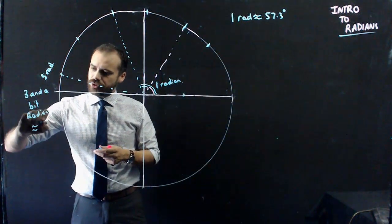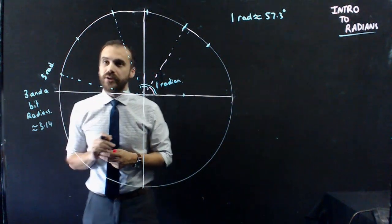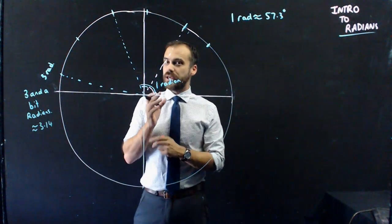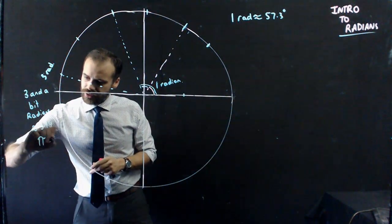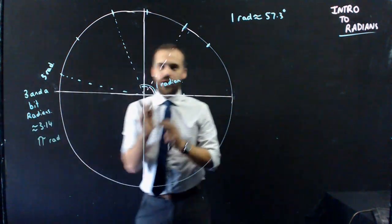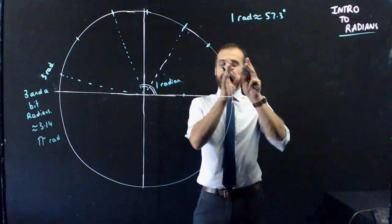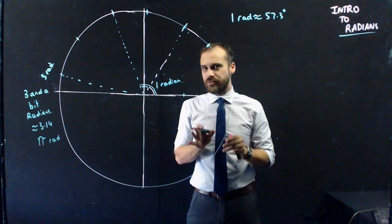But, to be more precise, it's approximately 3.14 radians, and to be even more precise than that, it is pi radians. And that's where it comes down. That's where the rubber hits the road here with radians.